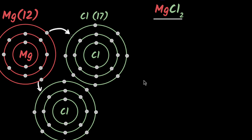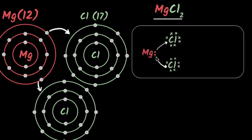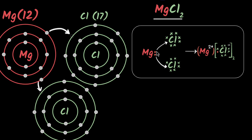In the electron dot structure, we show the two valence electrons of magnesium being transferred to two chlorines, each with seven valence electrons. Magnesium loses two electrons so it has a 2+ charge, and each chlorine gains one electron for a 1− charge. Two chlorines bond with one magnesium, the charge keeps them together, an ionic bond is formed, and that's how we get MgCl₂. That's basically how ionic bonds are formed.